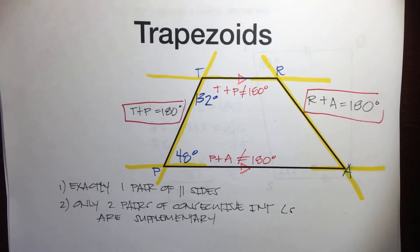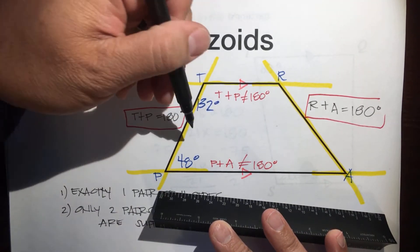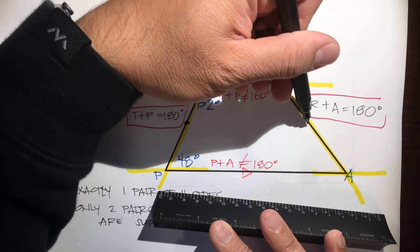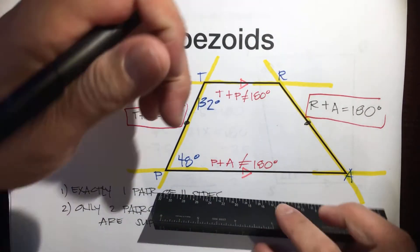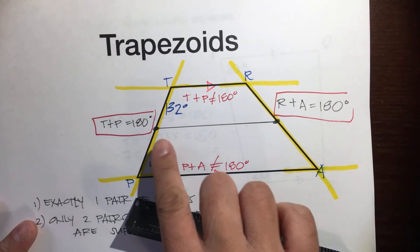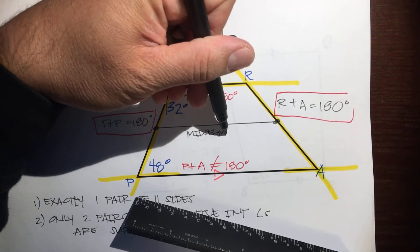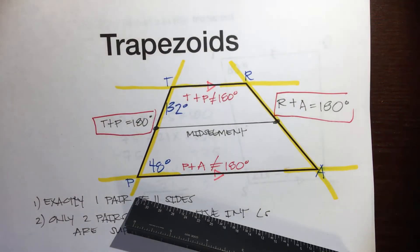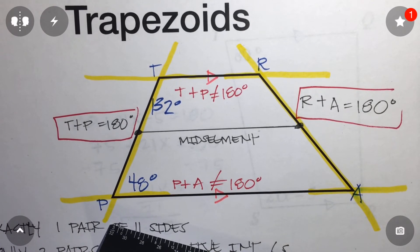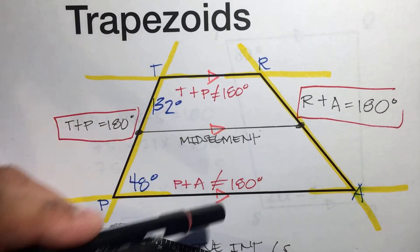The next fact about trapezoids is this: if you find the midpoint of TP and the midpoint of RA and connect the dots, you would make this line right here called the midsegment. The midsegment is parallel to the other lines. So all three of these lines are parallel, and you could come up with some other rules — these add up to 180, these are corresponding so they're the same.